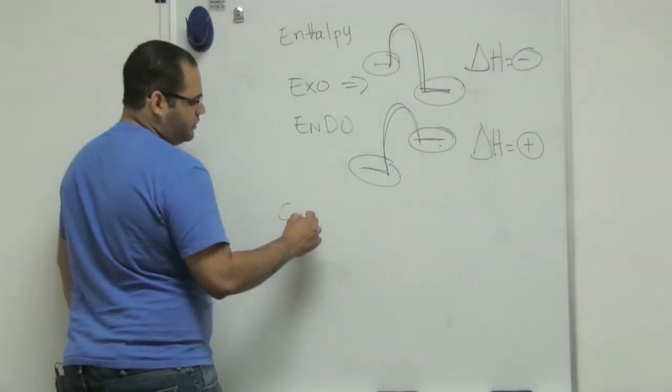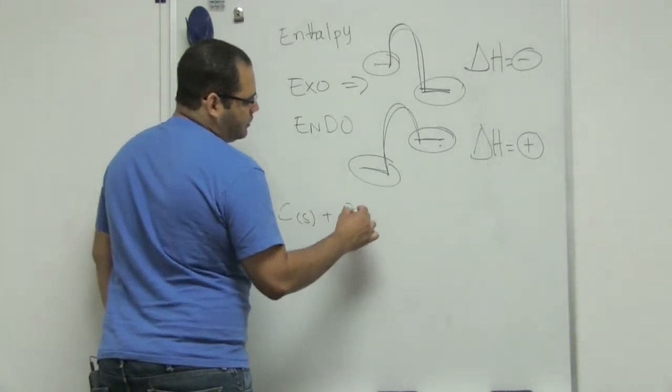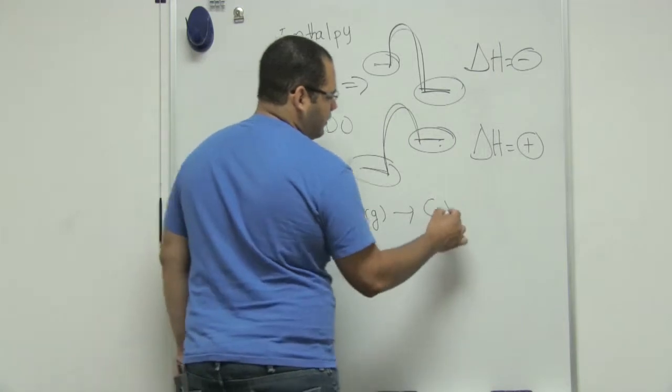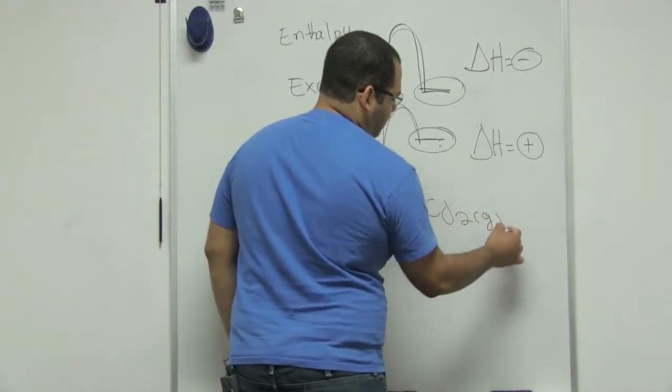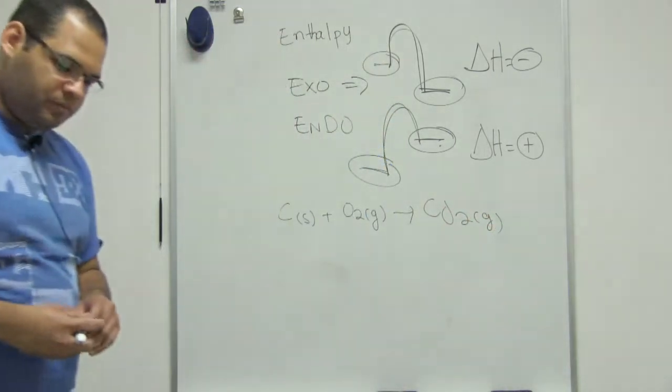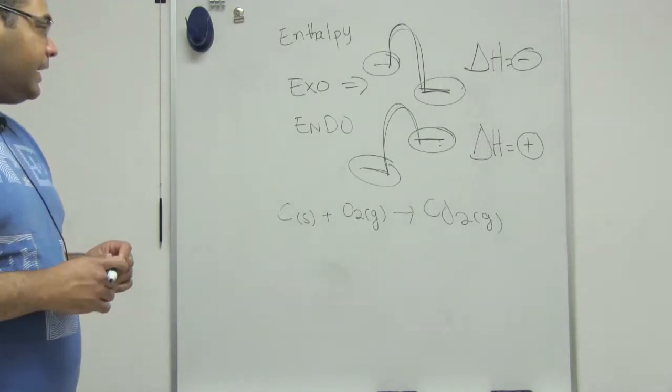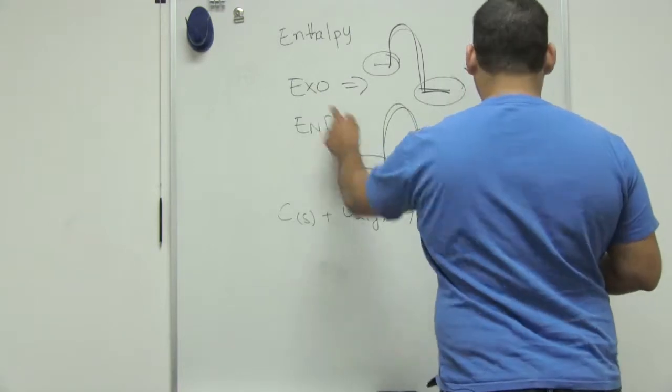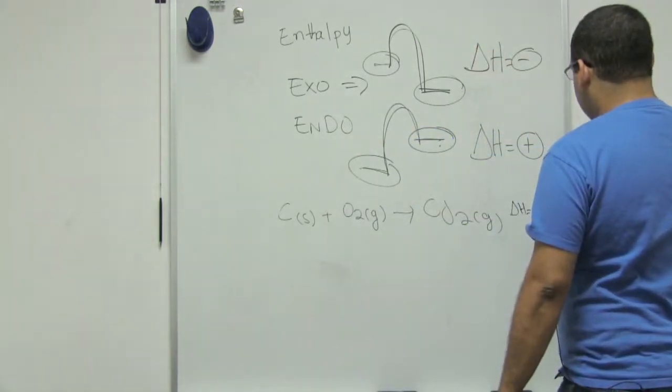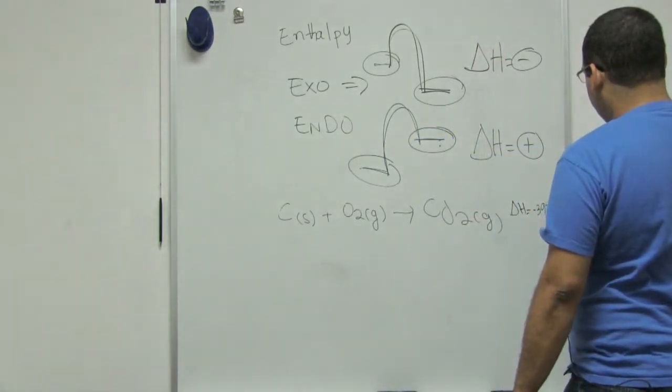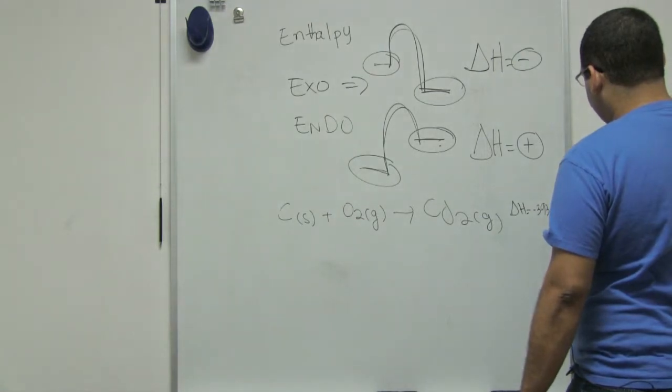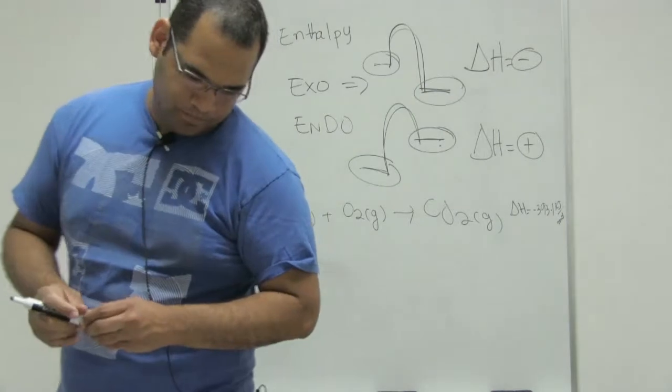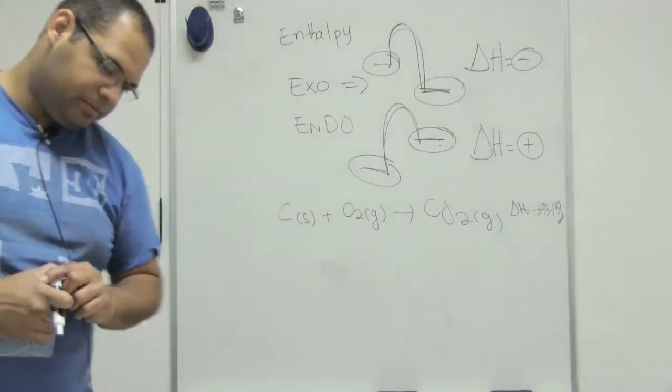Where I have carbon and oxygen combining, making CO2 gas. And this reaction is exothermic, negative 393.5 kilojoules per mole.